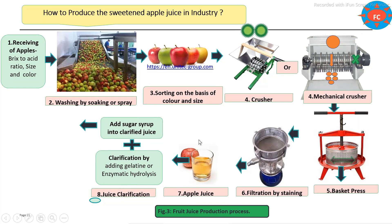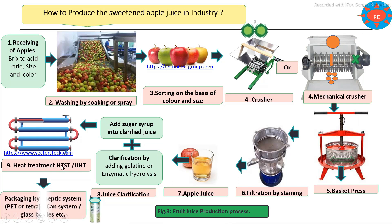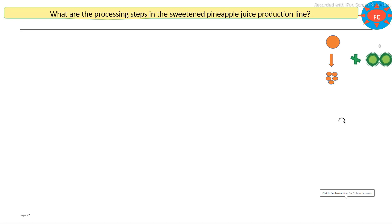In some industries, clarification is carried out on the apple juice. Several clarification systems are available, including addition of clarifying agents or enzymatic hydrolysis to clarify the fruit juice. After clarification, standardization is done by addition of sugar syrup. After that, thermal treatment is carried out by passing the juice through tubular heat exchangers. Finally packaging is done using different systems — aseptic packaging, can systems, or glass bottle systems.